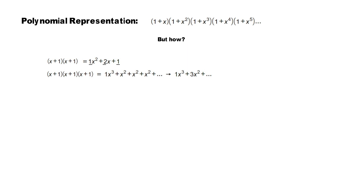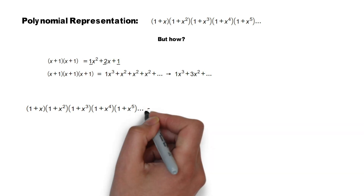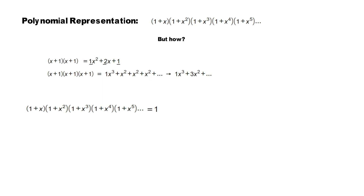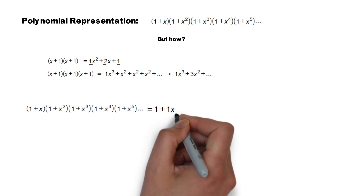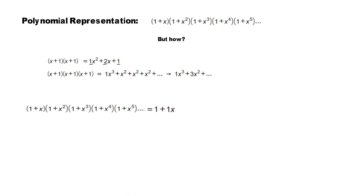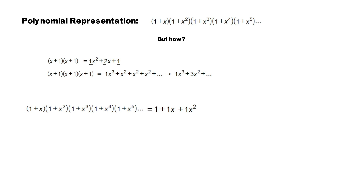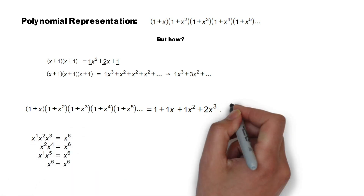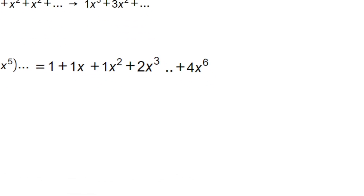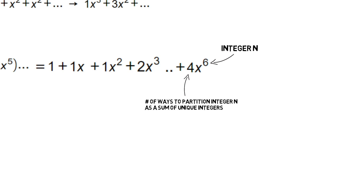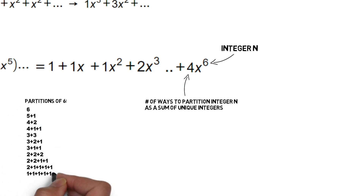We can use this same idea when we expand the polynomial representation (1 + x)(1 + x²)(1 + x³).... How many ways can we get 1? Only one way, by multiplying all the 1s. How many ways can we get x? Once, from the first binomial. How many ways can we get x²? Once, from the second binomial. How many ways can we get x³? Twice: by multiplying x and x², or taking x³ itself. And we can get x⁶ four ways. The exponent represents the integer n, and the coefficient represents the number of ways to partition that integer n as a sum of unique integers. You can verify that partitioning 6 yields four partitions that are sums of unique integers.